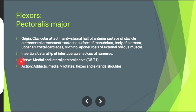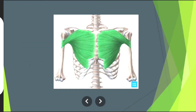Nerve supply: medial and lateral pectoral nerve. Action: involved in shoulder adduction, medial rotation, shoulder flexion, and shoulder extension. The muscle in green is pectoralis major muscle.